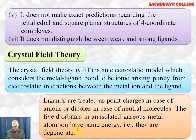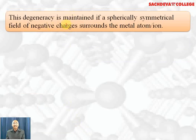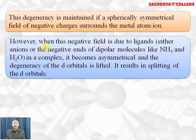The five d orbitals in an isolated gaseous metal atom or ion have the same energy — they are degenerate. The degeneracy is maintained if a spherical symmetrical field of negative charge surrounds the metal atom or ion. However, when this negative field is due to ligands — either anions or negative ends of dipolar molecules like ammonia and water — it becomes asymmetrical and the degeneracy of the d orbitals is removed.